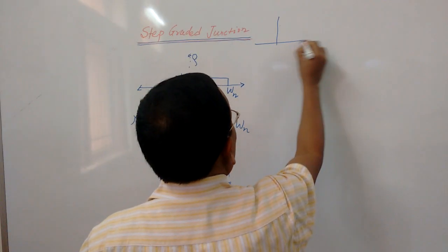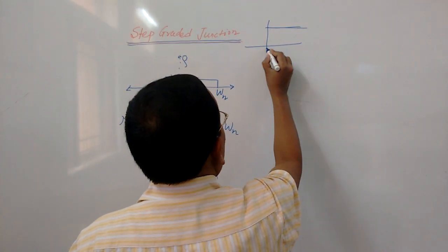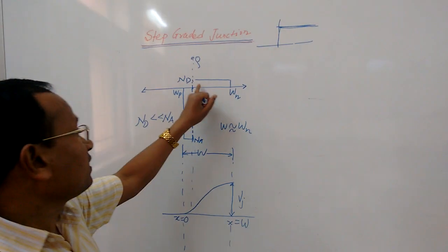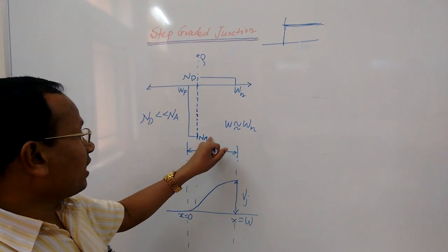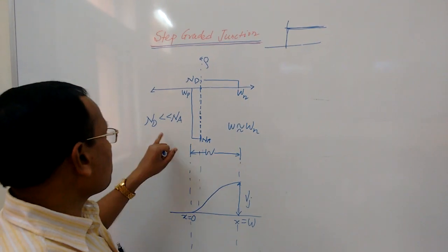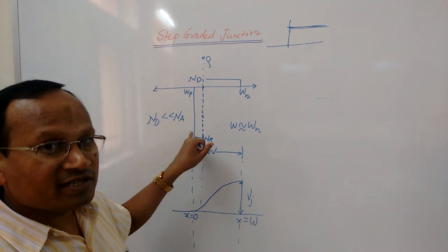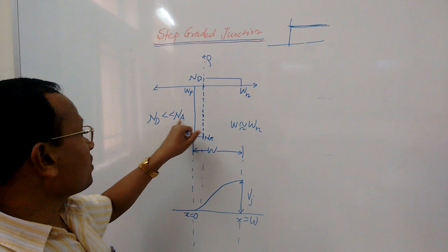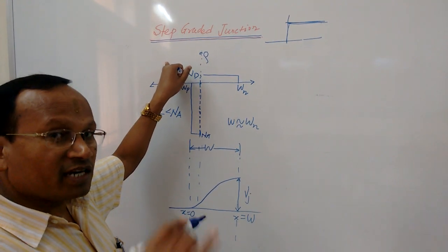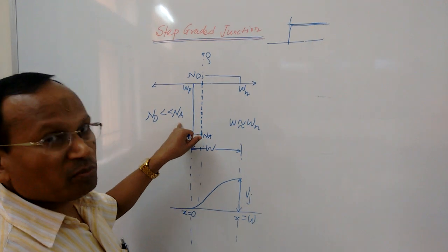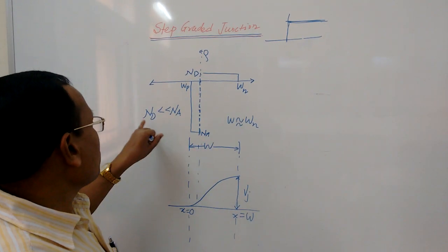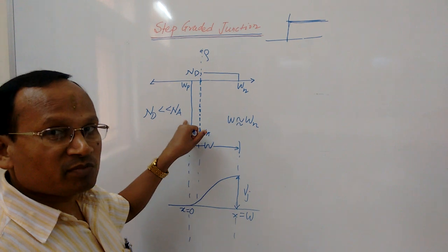As we know, the step signal shows an abrupt change in concentration. You can see that there is an abrupt change — this is the value of Na and this is the value of Nd. There are two possibilities. One possibility being discussed here is Nd is much much smaller than Na. This is the N side and this is the P side. The second possibility is Na may be much much smaller than Nd.